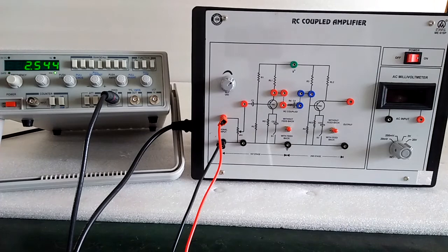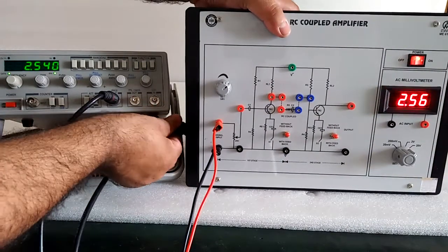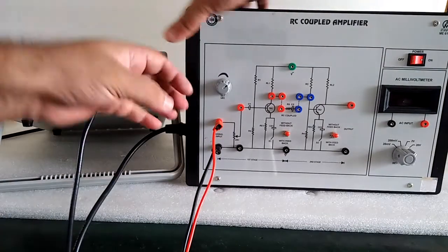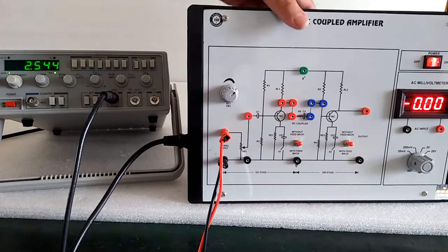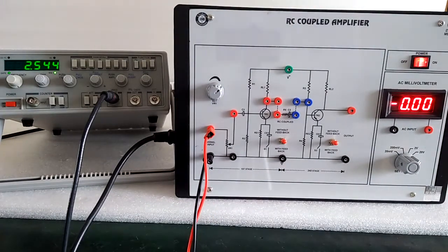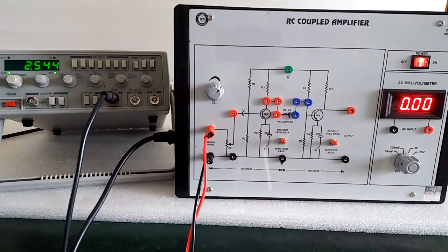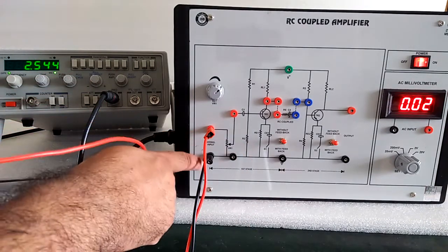Now I will come to the experiments. Connect the AC mains to the kit, switch on the instrument, then give the output of the function generator to the circuit.